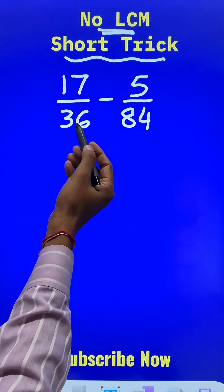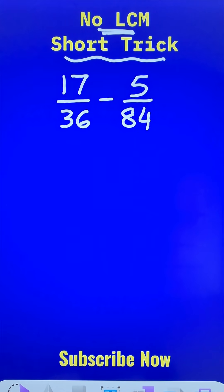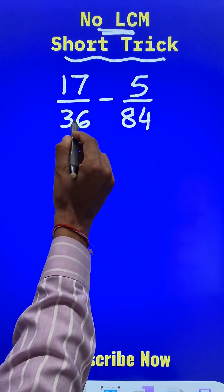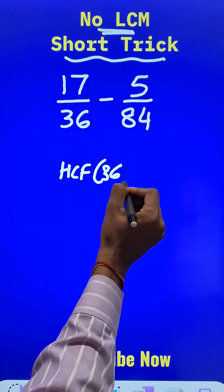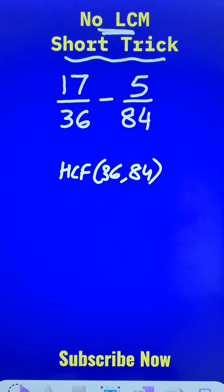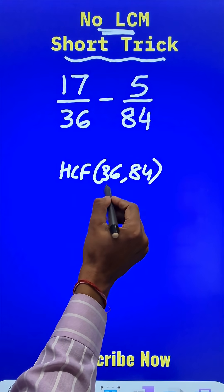Now if you start taking the LCM, finding the LCM itself is a difficult task. So how about finding what is the highest common factor HCF of 36 and 84? I can see that 36 and 84, they go into 12.